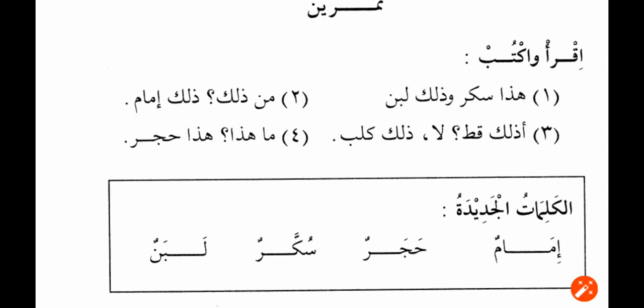La, dalika kittun — no, that is a cat. Dalika sarirun — that is a cot. Man hada wa man dalika? Hada mudarishun wa dalika imamun — this is a teacher and that is an Imam. Ma dalika? Dalika hajarun — that is a stone. Hada shukharun wa dalika labanun — this is sugar and that is milk. Al-kalimatul jadidatu: imamun, hajarun, shukharun, labanun.